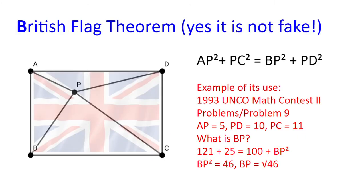Next we have the British Flag theorem and yes this is not fake. It states that AP squared plus PC squared equals BP squared plus PD squared. So if AP equals 5, PD equals 10, PC equals 11,